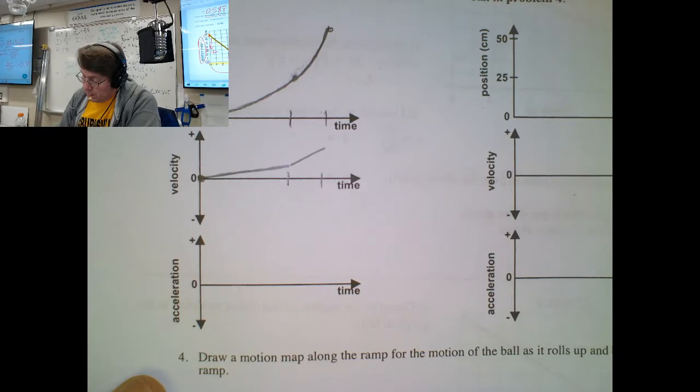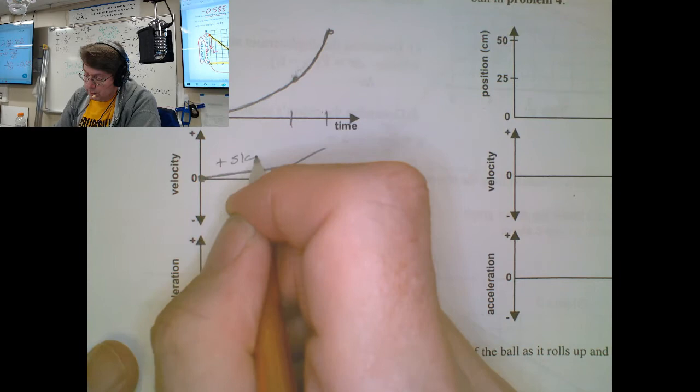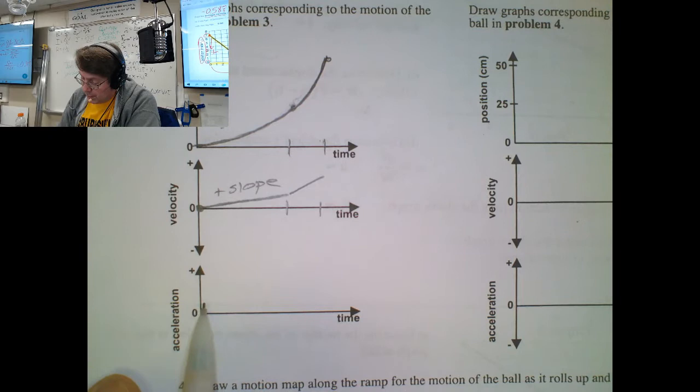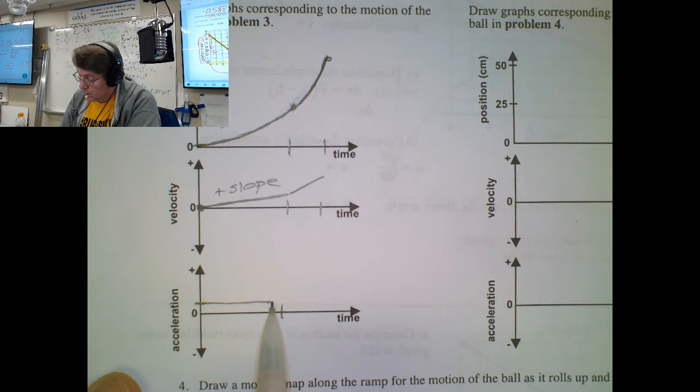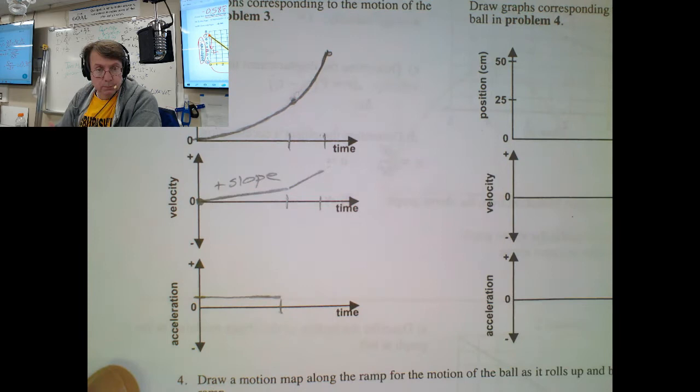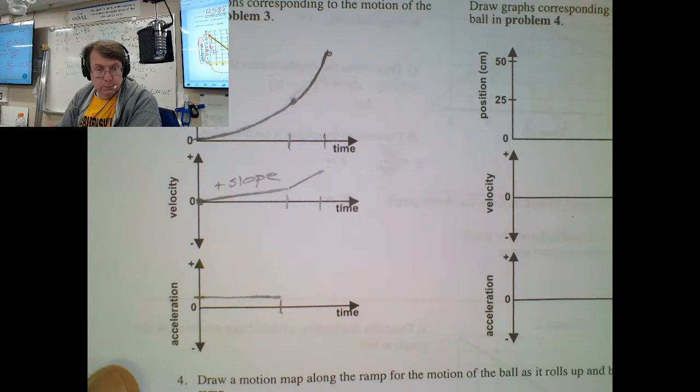And then finally, for the acceleration, it's going to have a constant positive slope here. And the slope of the velocity graph is acceleration. So I'd pick a shallow positive value up to this time. And then this is a steeper slope, and it's still a positive slope. So I would go up to a bigger positive acceleration. All right. Thank you.